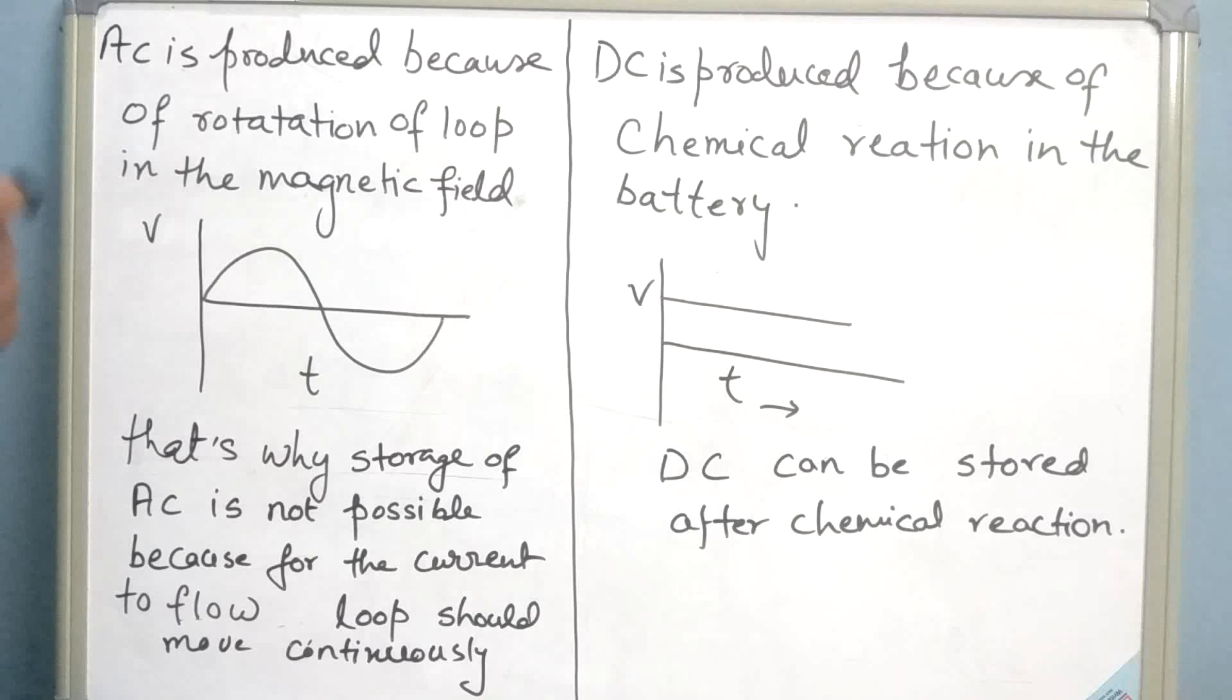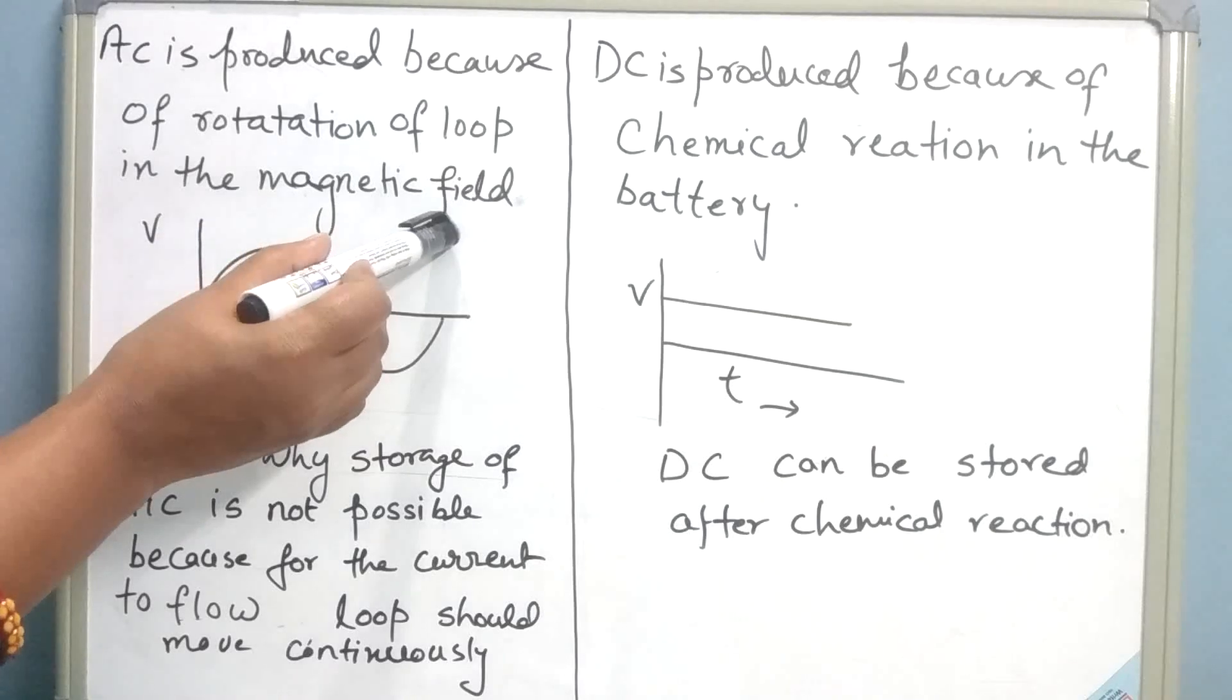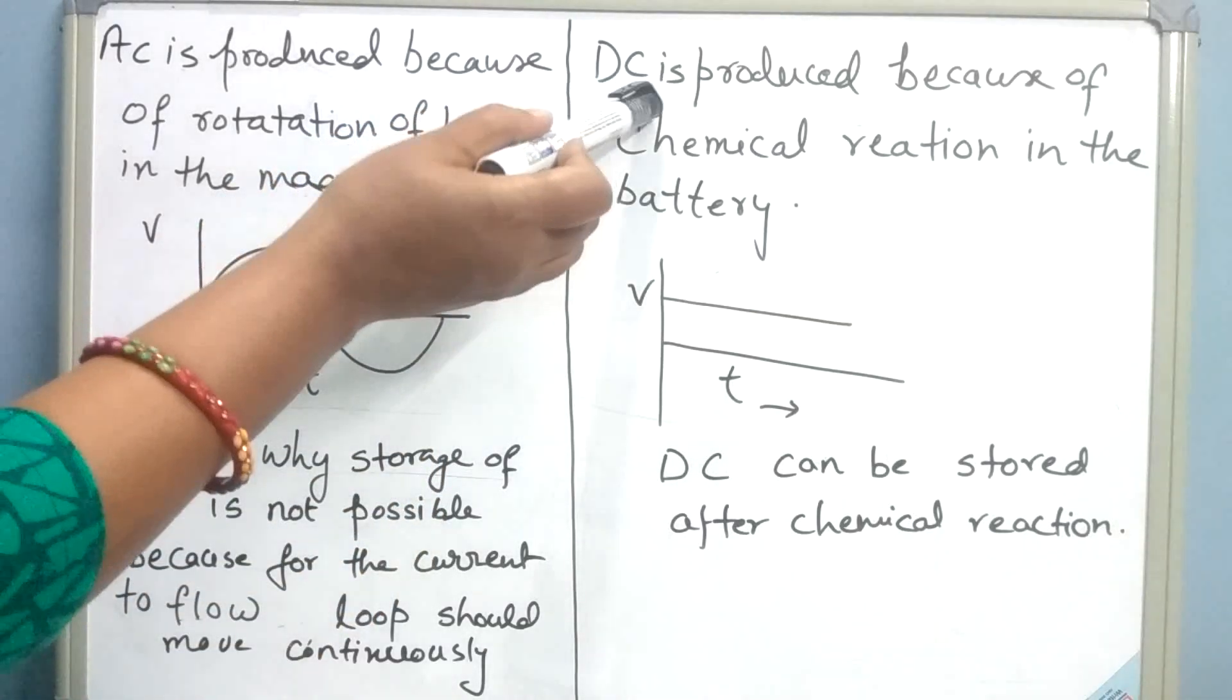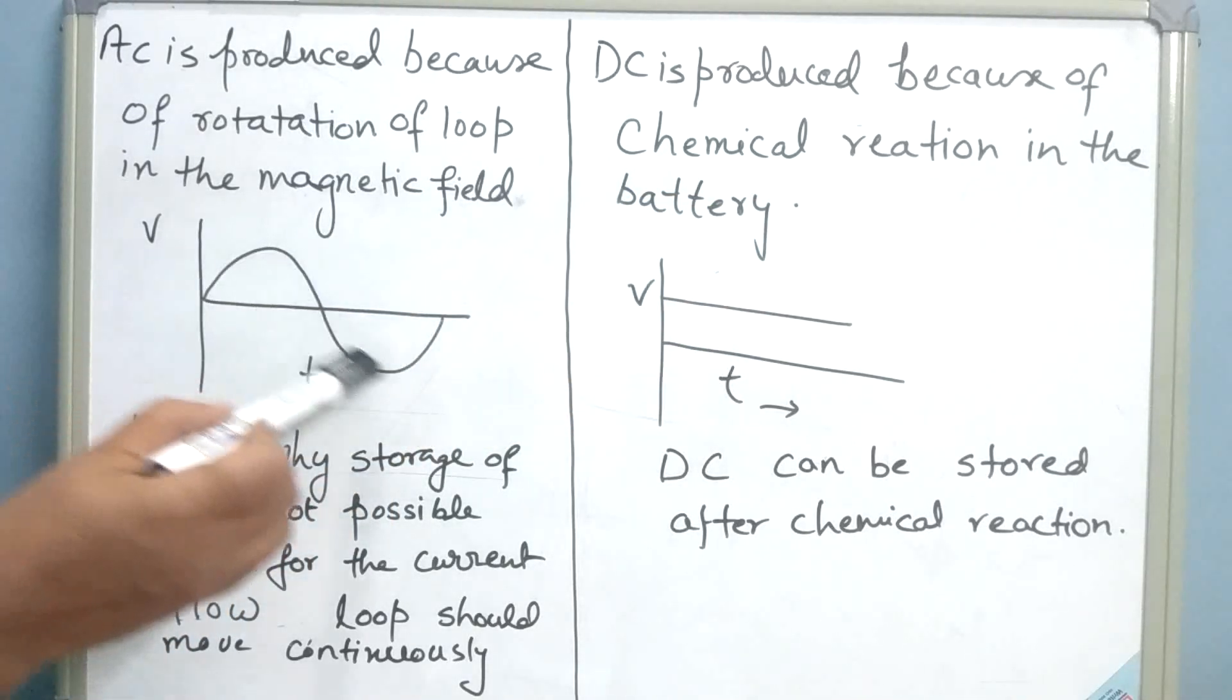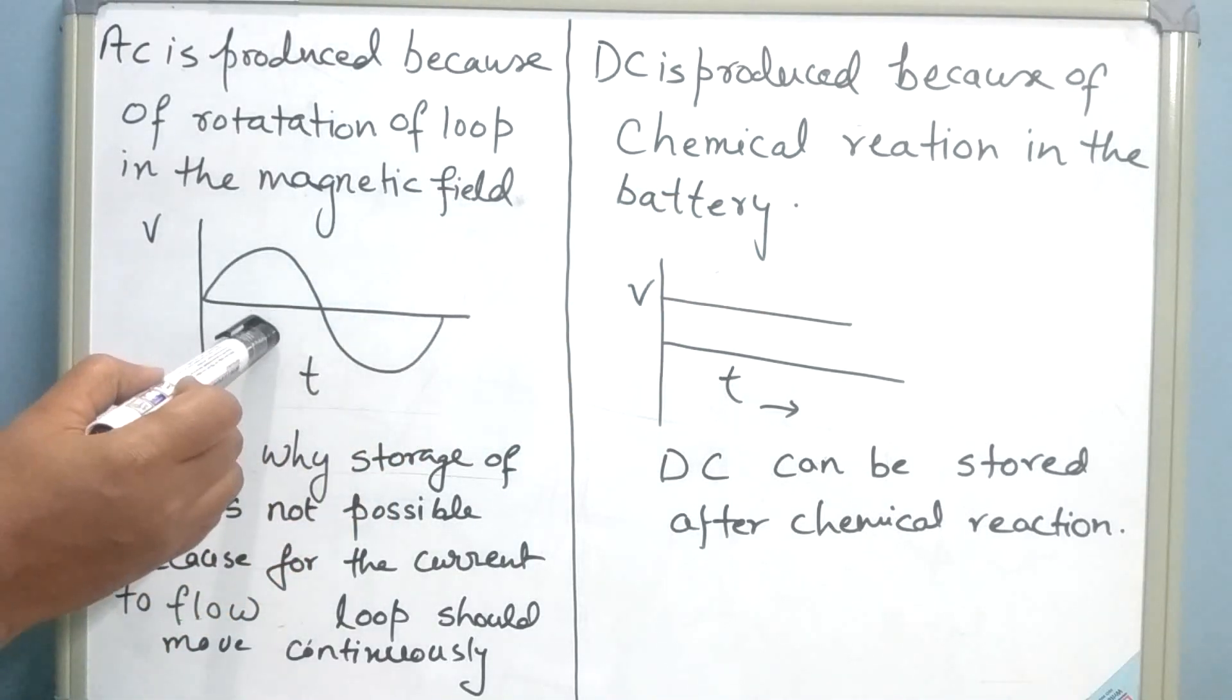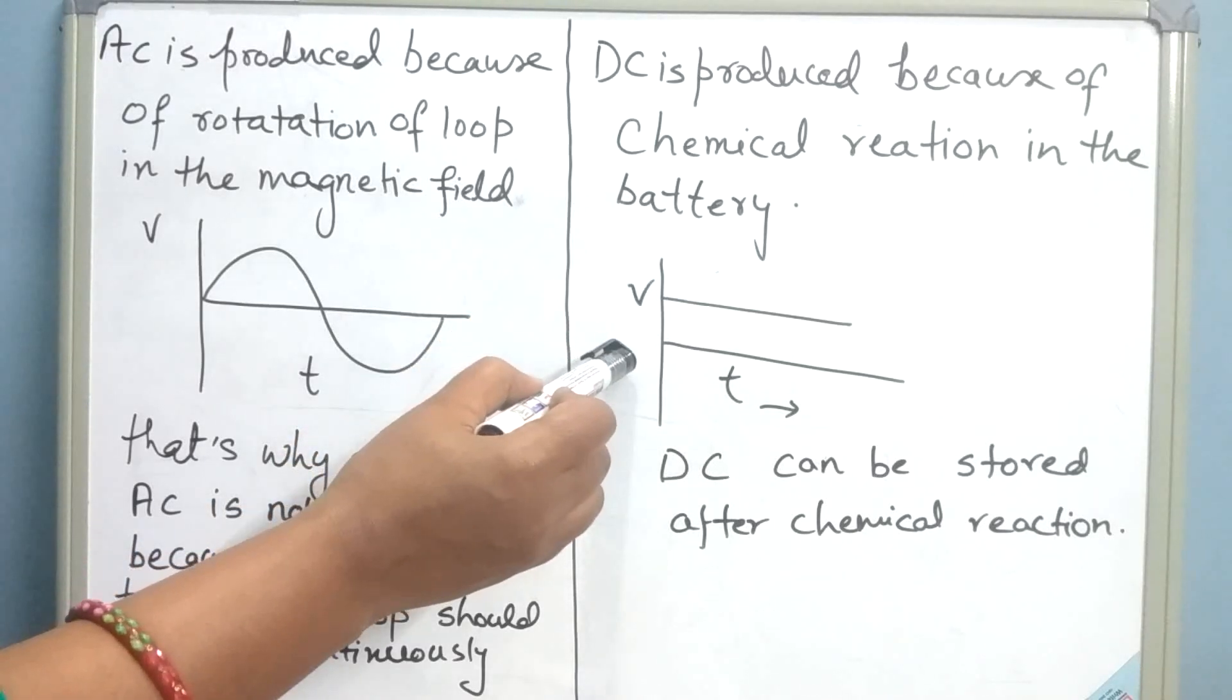Now we can conclude that AC is produced because of rotation of loop in the magnetic field, whereas DC is produced because of chemical reaction in the battery. This is the diagram, how to represent an AC current and this is the diagram, how to represent a DC current.